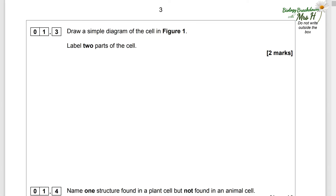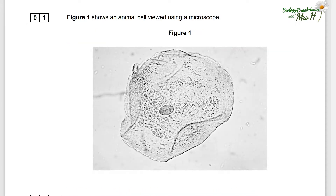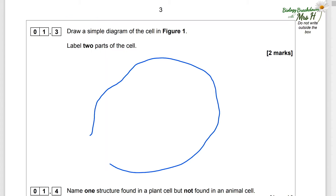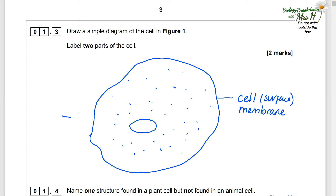Draw a simple diagram of the cell in Figure 1, labelled with two parts of the cell. Look at the cell in Figure 1 — it is an animal cell, and you can tell it's an animal cell because it doesn't have a cell wall and it doesn't have a rigid or regular shape. So make sure you don't add a cell wall to your diagram. Just keep your drawing nice and simple: label a cell surface membrane around the outside, a nucleus, and there are some other structures too. Label two parts — I'm going to stick with the cell membrane and the nucleus. Of course, you could also label the cytoplasm.